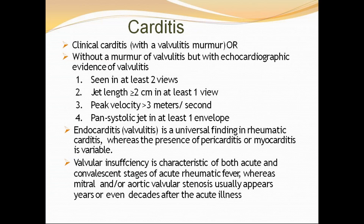Subclinical carditis is diagnosed by echocardiographic evidence of valvular involvement without an audible murmur. The echocardiographic criteria for subclinical carditis: seen in at least two views, jet length more than 2 cm in at least one view, peak velocity more than 3 m/s, and systolic jet in at least one envelope. All four points must be met. Endocarditis is a universal finding in rheumatic carditis. Mitral regurgitation appears early; mitral stenosis develops years or decades later.